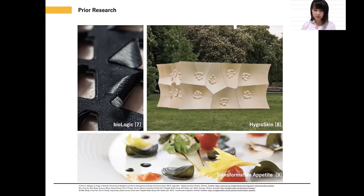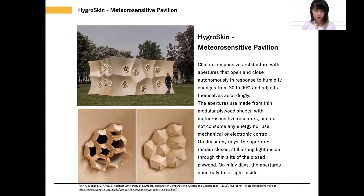There is not much prior research on environment-responsive products, but they are starting to gather attention in various fields such as architecture, fashion, and food. For example, hygro-skin is a climate-responsive architecture with apertures that open and close autonomously in response to humidity changes from 30 to 90%. The apertures are made from thin modular plywood sheets with moisture-sensitive receptors and do not consume any energy nor use mechanical or electronic control.